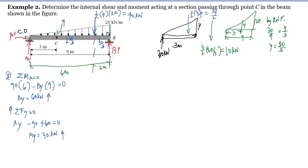We now expose the internal loadings. Since we cut and took the left portion of the beam, we have NC directed to the right, VC directed downward, and MC counterclockwise — following the design convention. For the summation of vertical forces equal to zero, taking upward as positive, we have 30 upward minus the resultant load...